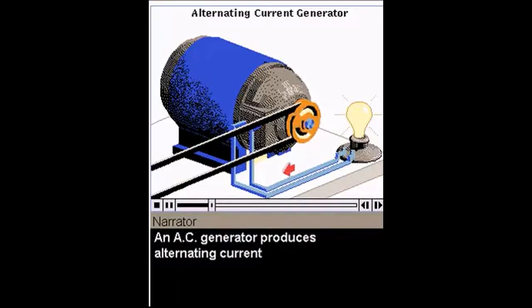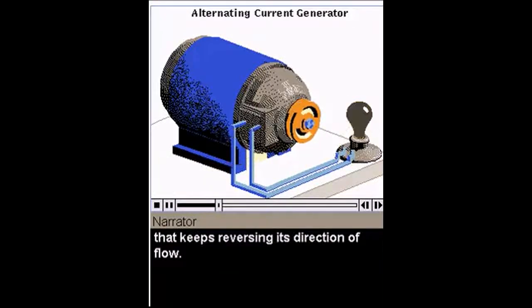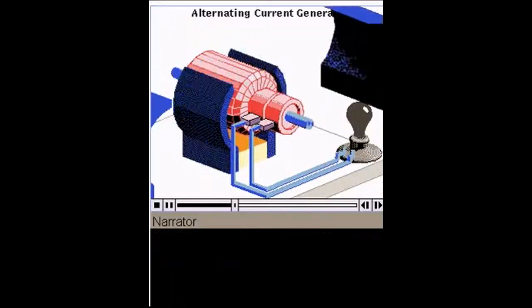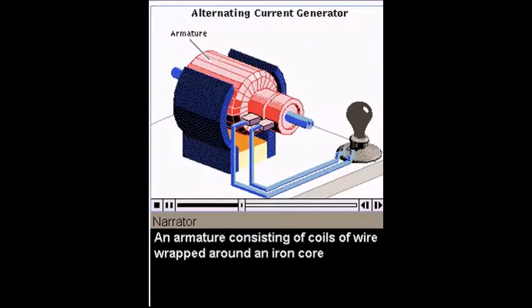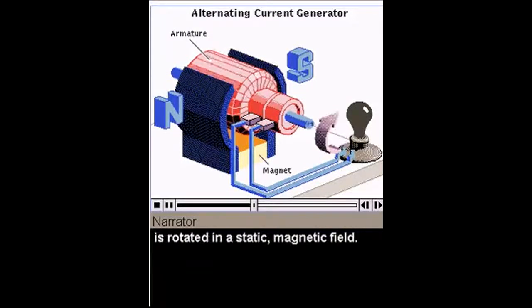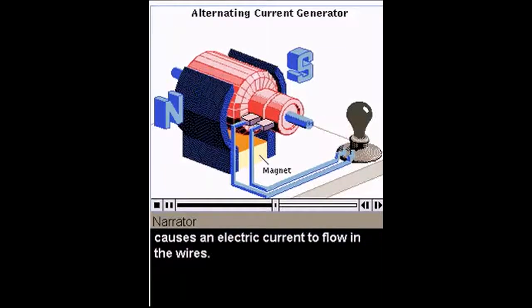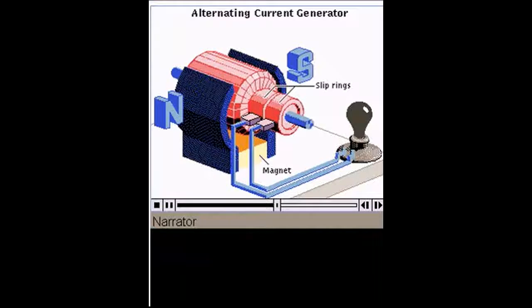An electric generator converts mechanical energy into electrical energy. An AC generator produces alternating current that keeps reversing its direction of flow. An armature, consisting of coils of wire wrapped around an iron core, is rotated in a static magnetic field. The movement of the coil through the field causes an electric current to flow in the wires. The wires are connected to slip rings. Brushes contact the slip rings and carry the electricity from the generator.